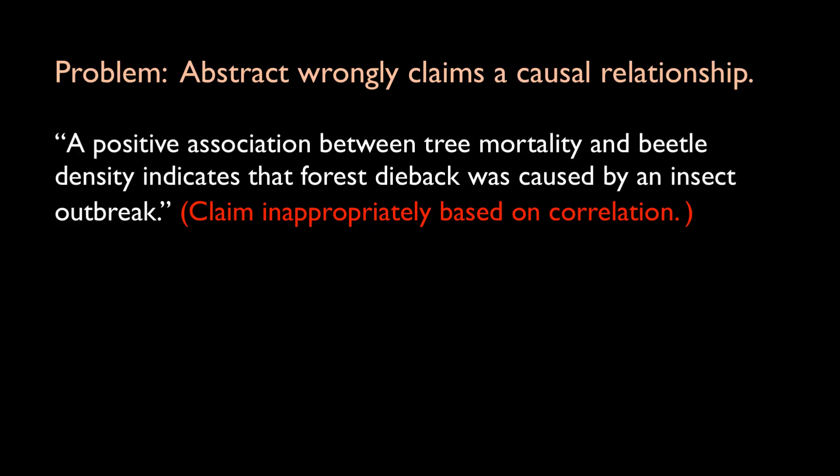Another type of distortion occurs when authors claim a causal relationship based on a correlative study. This type of distortion can occur when one factor is observed to vary in relation to another factor in an uncontrolled setting. Such a pattern may reflect a cause-and-effect relationship, but could just as easily happen because both variables are responding to a third unmeasured factor. For example, the observation that tree mortality increased with increasing abundance of an insect pest might suggest forest dieback was caused by that insect. But correlation does not equal causation.